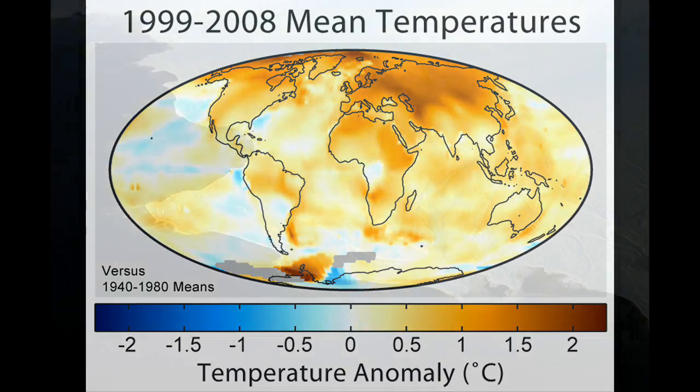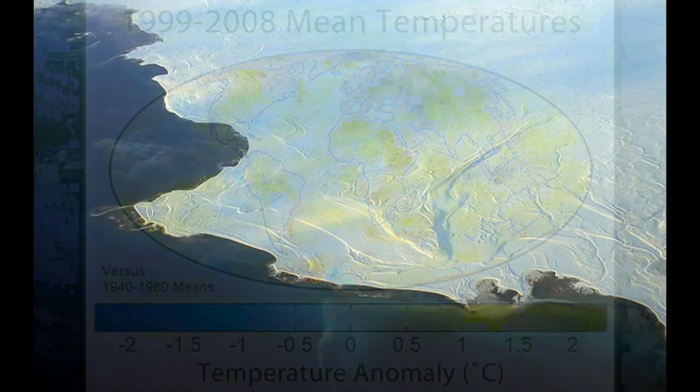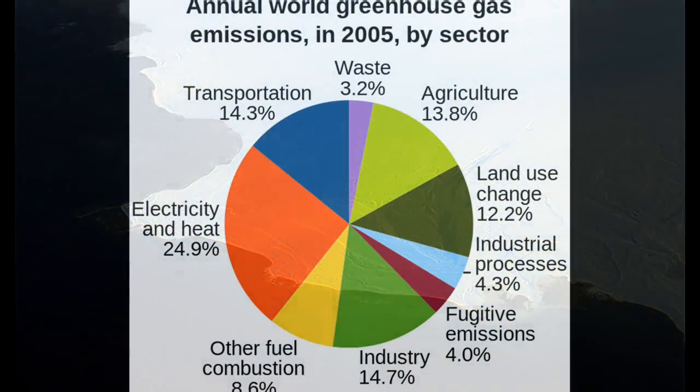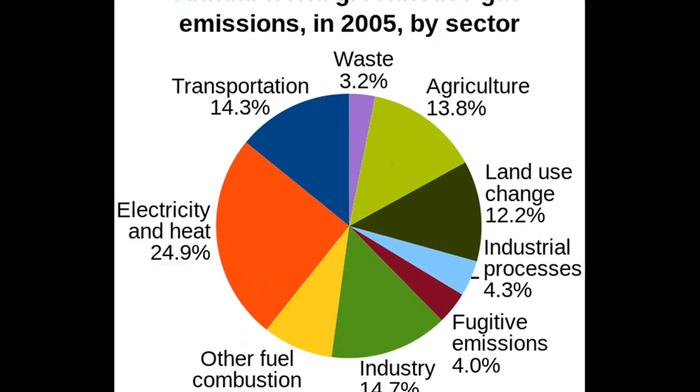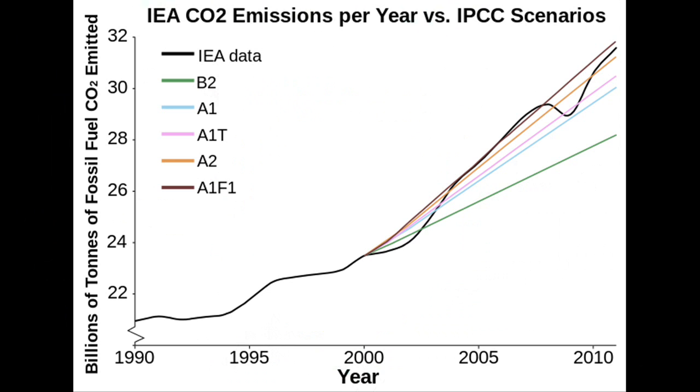Global warming is being caused by rising levels of atmospheric greenhouse gases such as carbon dioxide. Research to reduce this global warming usually involves three areas.